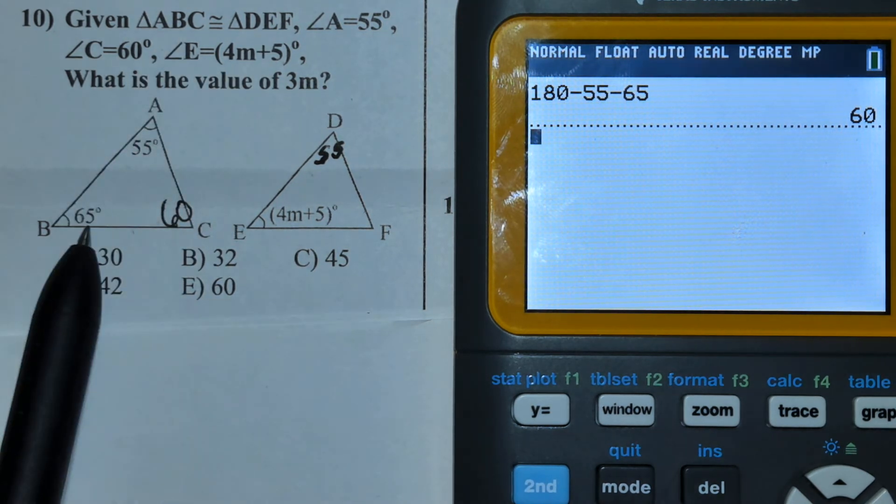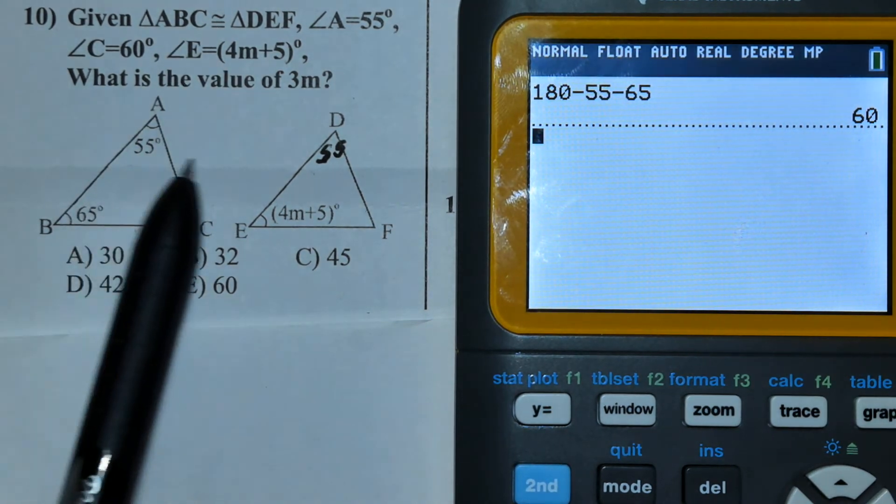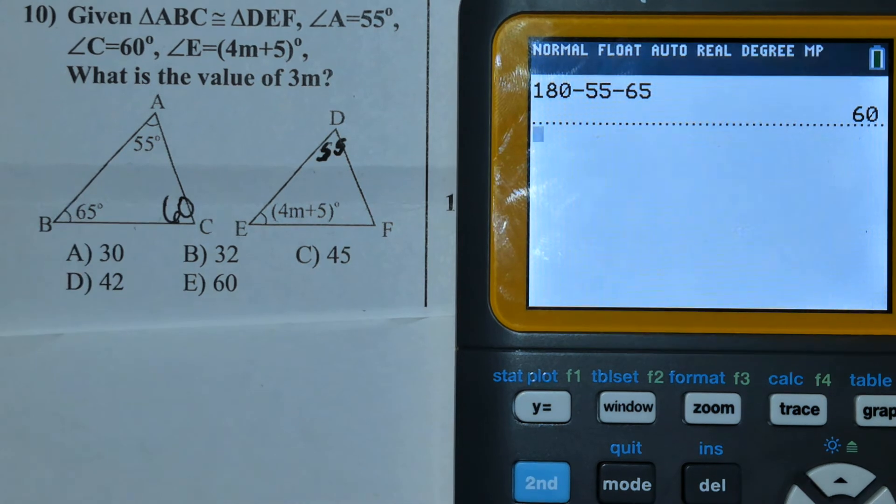Now what is B? B is 65. I'm going to take 65 and set it equal to the expression 4M plus 5.